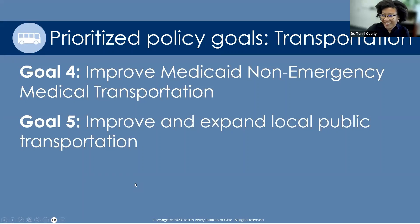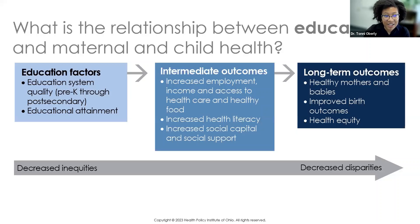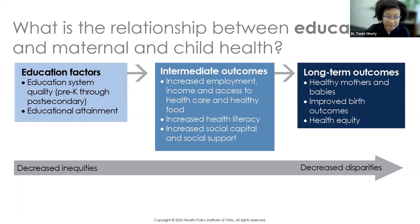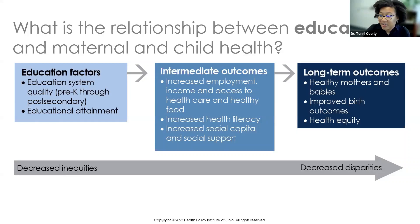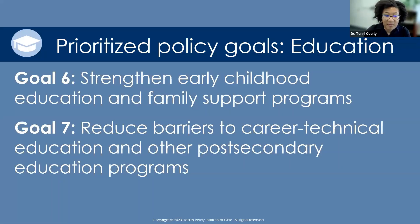Access to quality education is largely determined by where someone lives. Higher educational attainment leads to higher income, which leads to better access to healthy food and safe, stable housing. However, it's important to acknowledge that inequities in birth outcomes persist across socioeconomic status — we can't just educate or buy our way out of it. The education goals are to strengthen early childhood education and family support programs and to reduce barriers to career technical education and other post-secondary educational programs and opportunities.